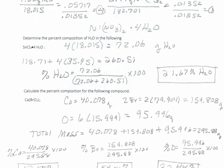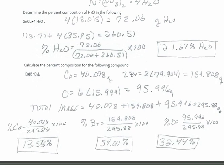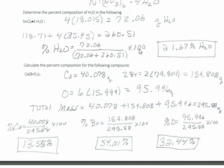Now we're doing percent compositions — take the part divided by the whole. First: determine the percent composition of water in SnCl₄ · 4H₂O. Get the mass of four waters: 4 × 18.015 = 72.06 grams. Then get the molar mass of tin chloride: tin is 118.71 plus four chlorines (35.45 each) = 260.51 g/mol. Percent water = water's mass divided by both added together, times 100 = 21.67% water.